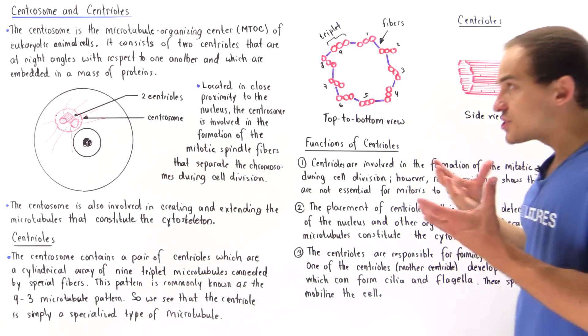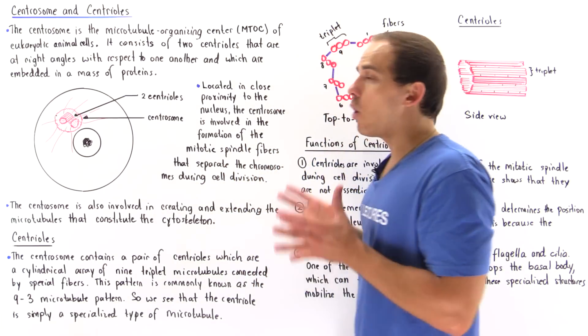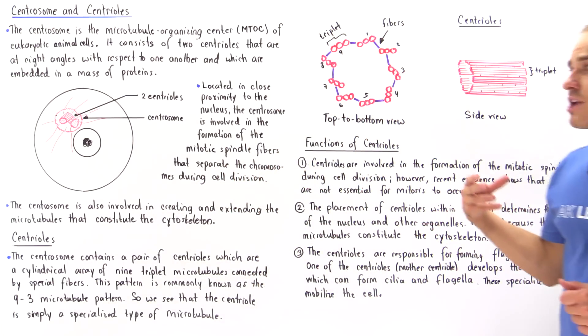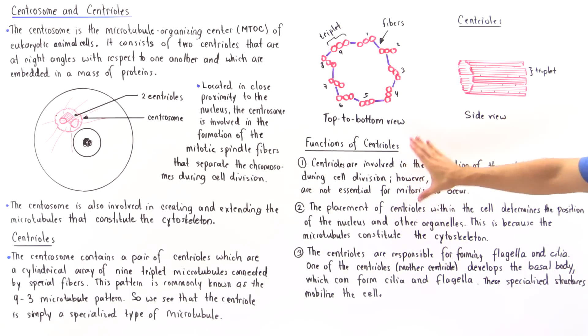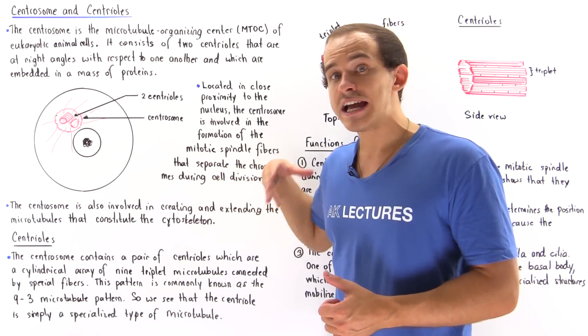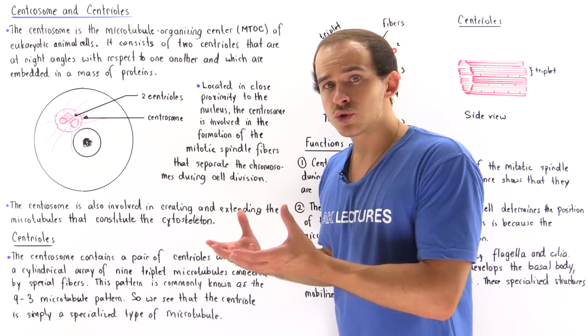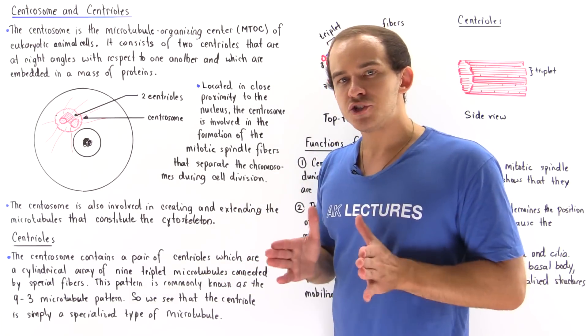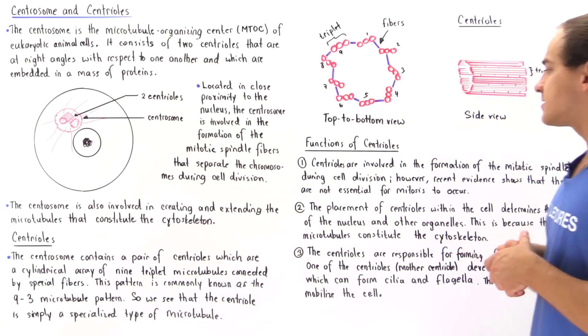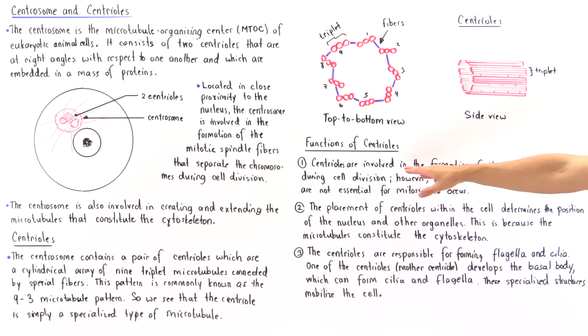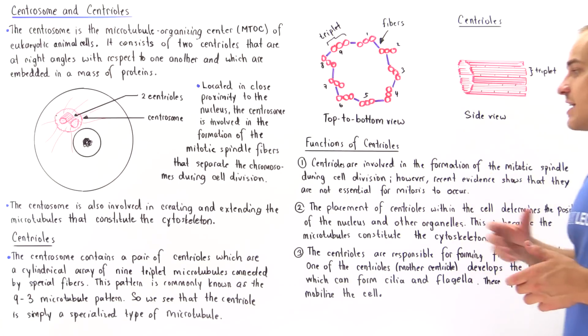Now that we know what the centrosome is and what the centriole is, what exactly is the function of our centrioles that are found within our centrosome? We have three very important functions. Function number one is basically what we mentioned earlier. The centrioles which are found inside a centrosome are involved in cell division and separating our chromosomes during our cell cycle. Centrioles are involved in the formation of mitotic spindle fibers during cell division. However, recent evidence shows that if we actually destroy our centrioles, our cell cycle still takes place, mitosis still takes place.